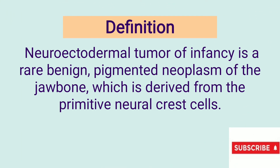First, let's learn the meaning of melanotic and neuroectodermal. Melanotic, or melanosis, is a condition characterized by abnormal deposition of melanin. Neuroectoderm consists of cells derived from ectoderm. So the definition is: neuroectodermal tumor of infancy is a rare benign pigmented neoplasm of the jawbone which is derived from the primitive neural crest cells.